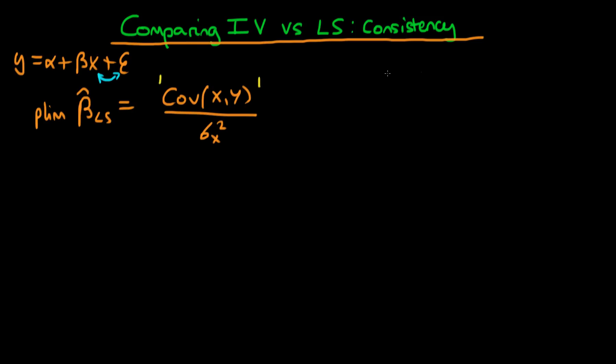And then if you go ahead and substitute in the explicit form for y into this relationship it's very easy to prove and I've proved it in previous videos. That the probability limit of beta hat least squares is equal to beta plus the covariance of x with epsilon divided by sigma x squared.